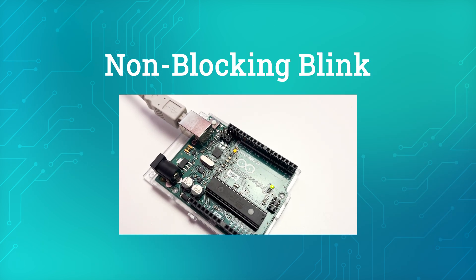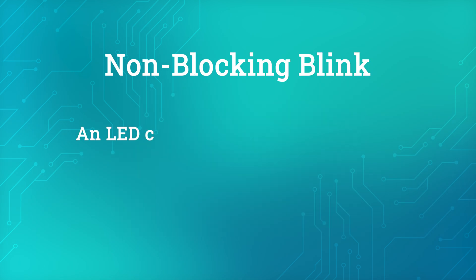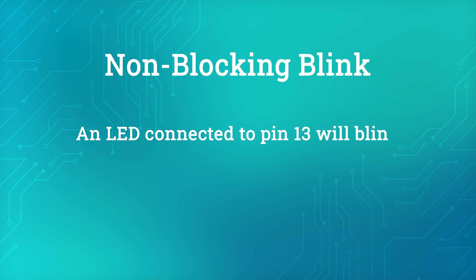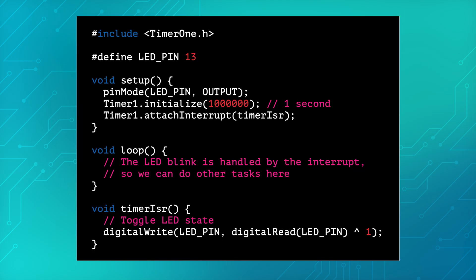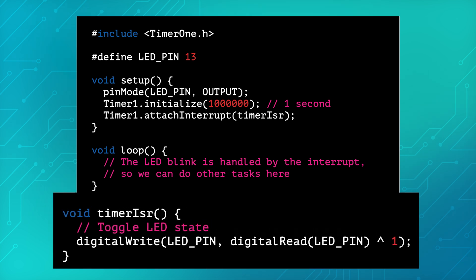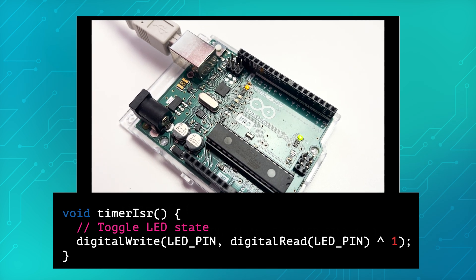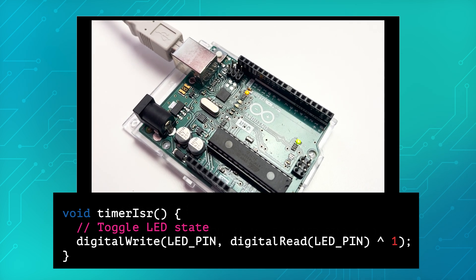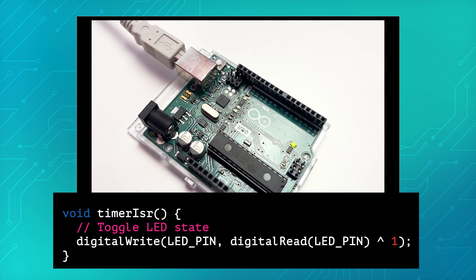To demonstrate a Timer1 interrupt, let's make a non-blocking blink. An LED will blink every second without using the delay function. Here is the sketch. The single line of code in the timerISR function drives the LED, making it blink at exact 1-second intervals, and the main loop remains free to handle other tasks.